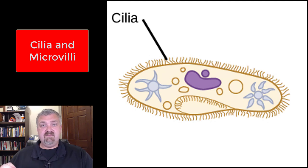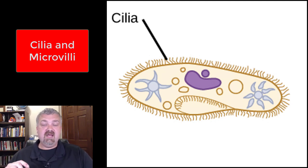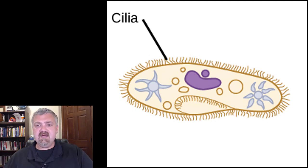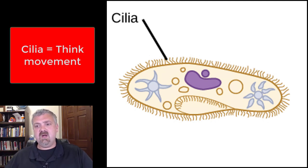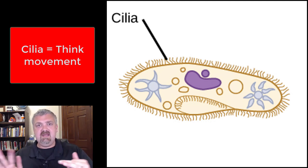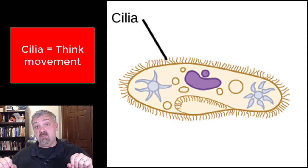Cilia are extensions of the plasma membrane, but they're going to have hollow microtubules in them that in many cases can contract, whereas microvilli will have microfilaments in them. Cilia function as sensors in some cases, but the primary function we care about is the fact that they contract — they beat in a wave-like pattern. For a single-celled organism, the contraction of these cilia would be like oars on a boat and actually move the cell.